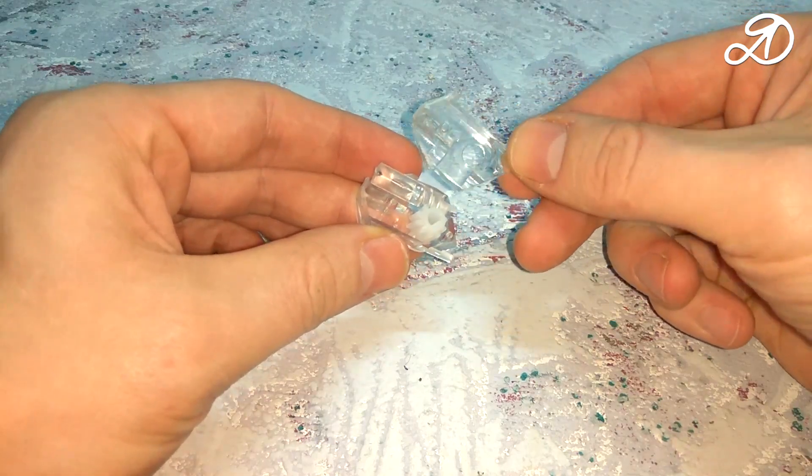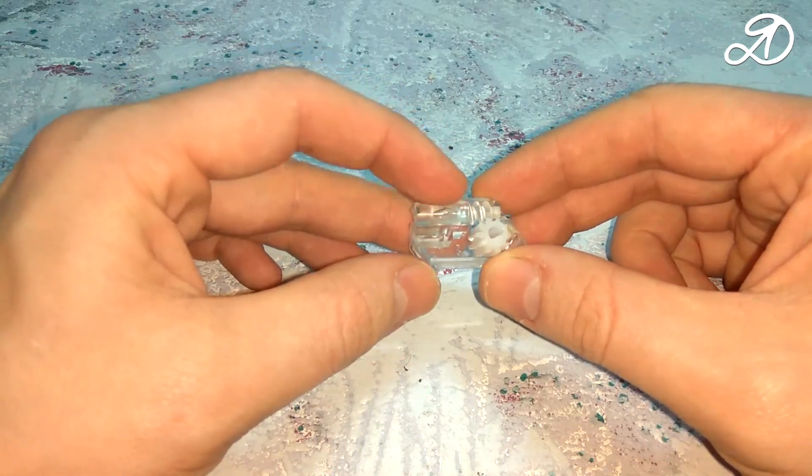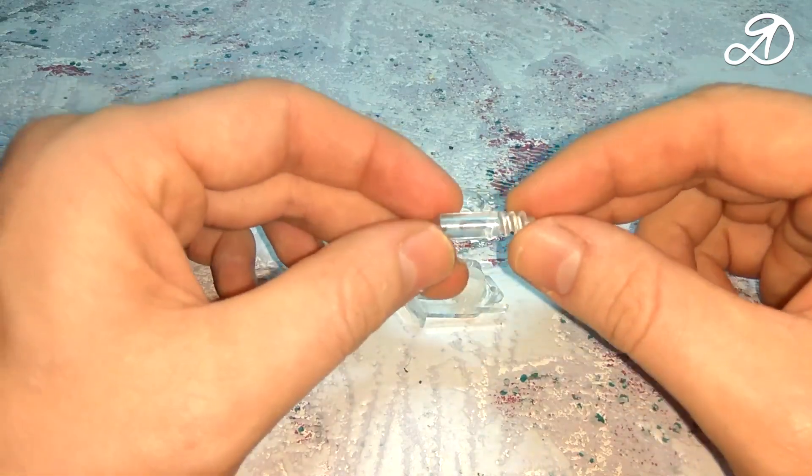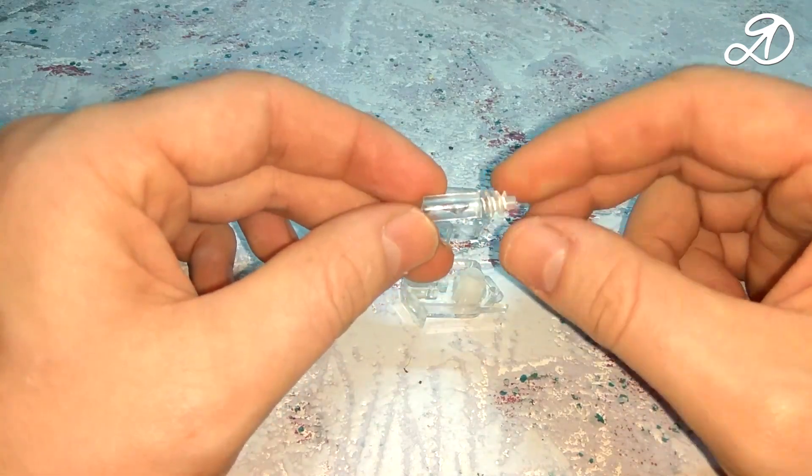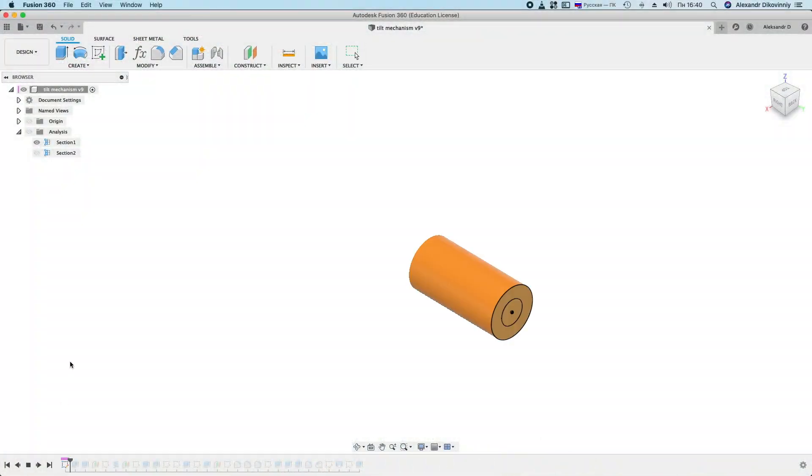Two pins were used for the connection. Now we need to model this rotating screw with a hook. I will model in Fusion 360 program. Let's see how the part was created.